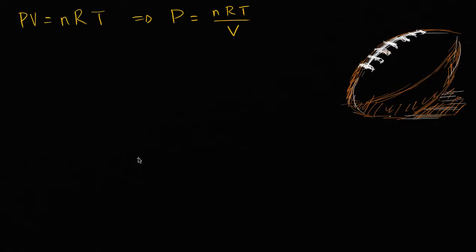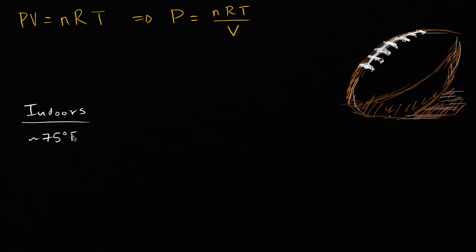Let's think about the exact case of what happened with the New England footballs — the argument for why they might have deflated naturally, why there might not be foul play. The argument is: maybe they were inflated indoors, where the temperature is just room temperature, roughly 75 degrees Fahrenheit, which is roughly 24 degrees Celsius. To apply the ideal gas law, we convert to Kelvin: approximately 297 Kelvin.